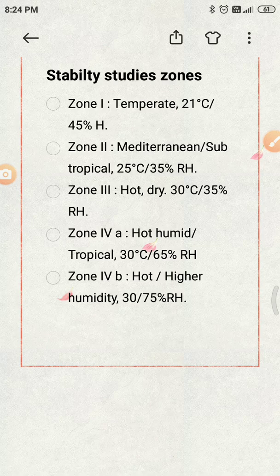What are the important countries belonging to the different climatic zones? Germany is related to Zone 1, with a temperature of 21 degrees Celsius and 45 percent relative humidity. USA covers almost all four zones — Zone 1, Zone 2, Zone 3, and Zone 4A — with temperature varying from 21 to 30 degrees Celsius and relative humidity from 35 to 65 percent. Japan falls under Zone 1, Zone 2, and Zone 4A, with temperature varying from 21 to 30 degrees Celsius and relative humidity from 45 to 65 percent.